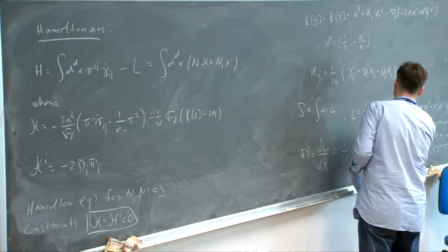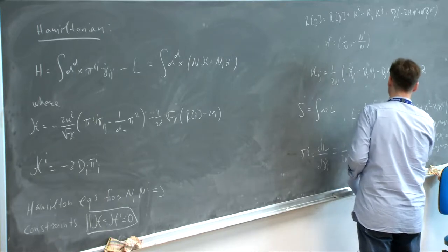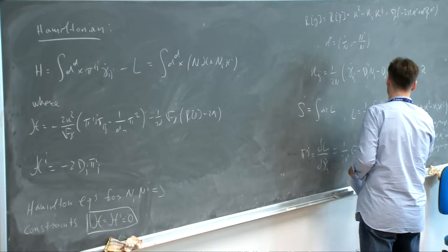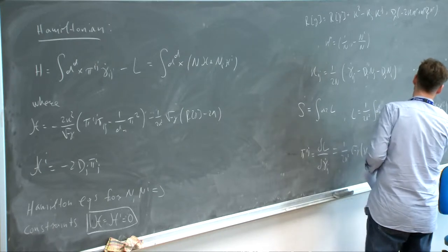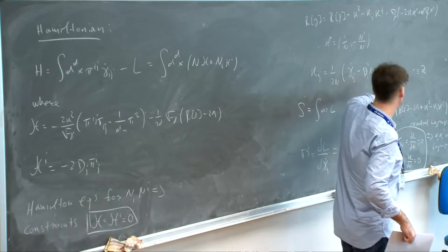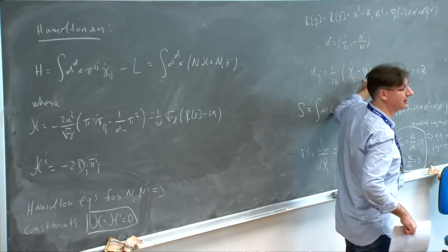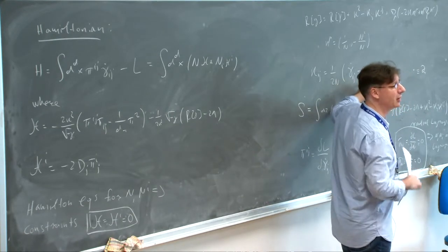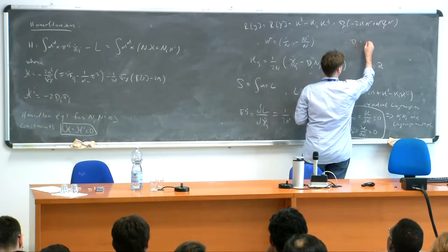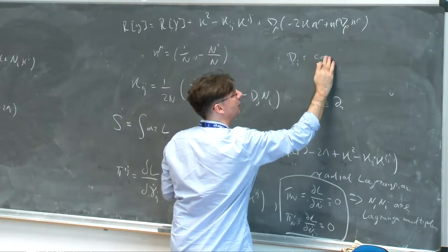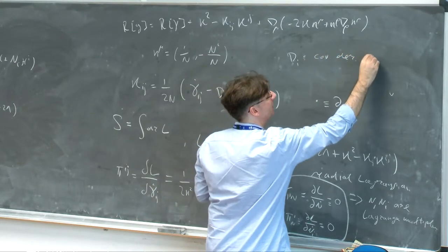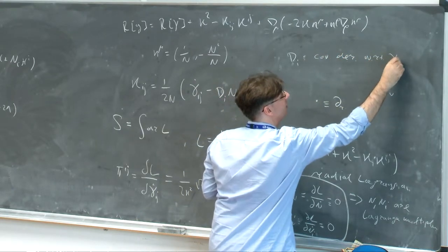Here, n_i appears only inside the extrinsic curvature. The covariant derivative d_i here is covariant with respect to the induced metric gamma_ij.